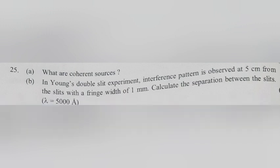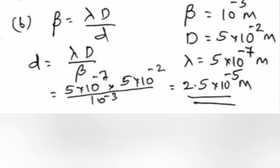Question 25B: In Young's double slit experiment, interference pattern is observed at 5 cm from the slit with a fringe width of 1 mm. Calculate the separation between the slits. Answer: β equals λD by d.